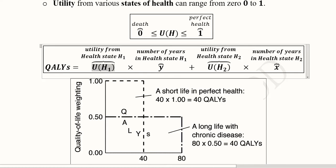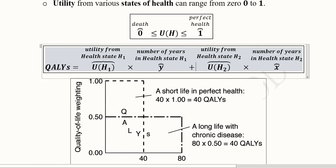We do the same product process with h2 — the number of years in the state of health h2 — and multiply them. We then add these two products together in order to get the overall QALY, that is Quality Adjusted Life Years.